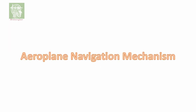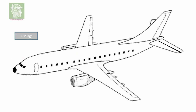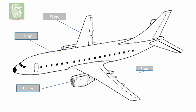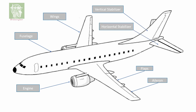Let's discuss the aeroplane navigation mechanism. For that, you need to know the body parts. The fuselage is the body of the aeroplane. There are two wings on both sides, and two engines on both sides to provide thrust. There is a flap at the back of the wing and an aileron section. One vertical stabilizer and two horizontal stabilizers are there. At the back there is a rudder, and two elevators.